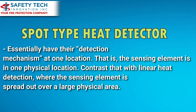Spot type detectors essentially have their detection mechanism at one location — that is, the sensing element is in one physical location. Contrast that with linear heat detection, where the sensing element is spread out over a large physical area.